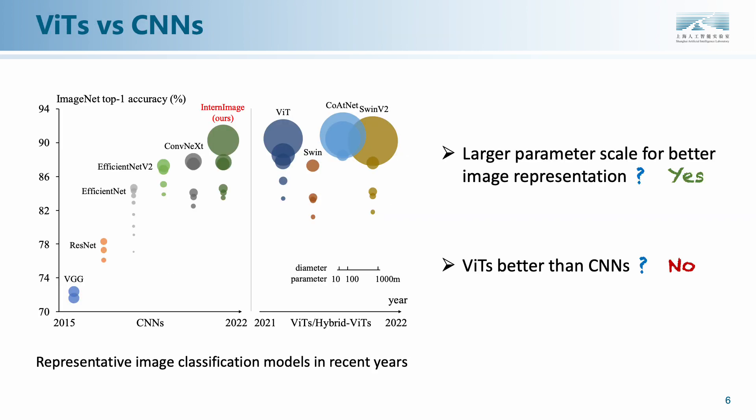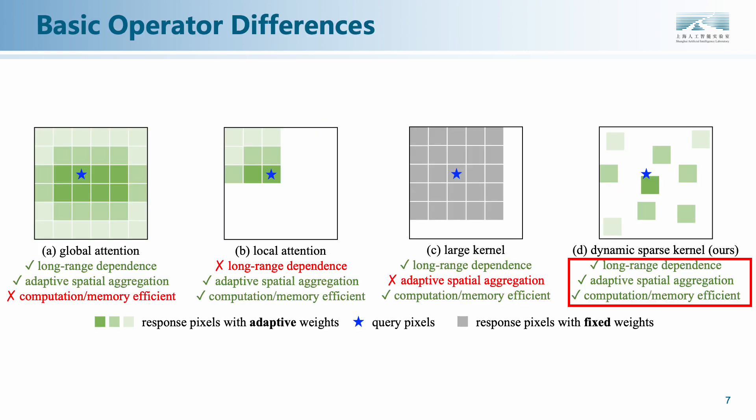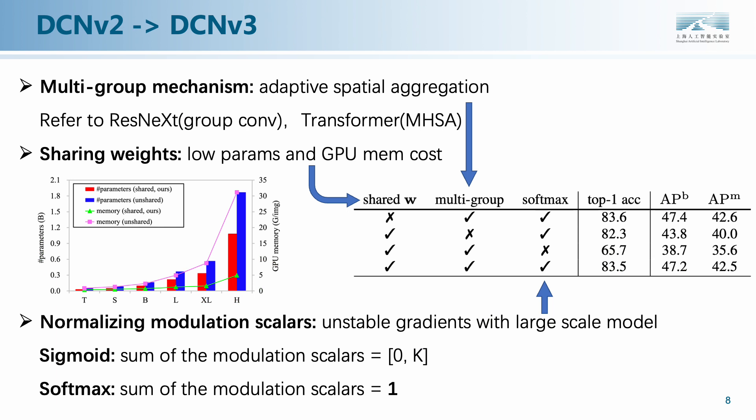Our work validates that as long as the CNN model has the same characteristics as the transformer, it can also scale up and achieve the best results so far. For operator design, our goal is to find and improve the model to make it easily scalable. We summarize and analyze several existing operator structures. We found that these operators are unable to achieve a balance of long-range dependence, adaptive spatial aggregation, and computation/memory efficiency. The InternImage operator satisfies these three important conditions simultaneously by a simple improvement of the DCNV2 operator.